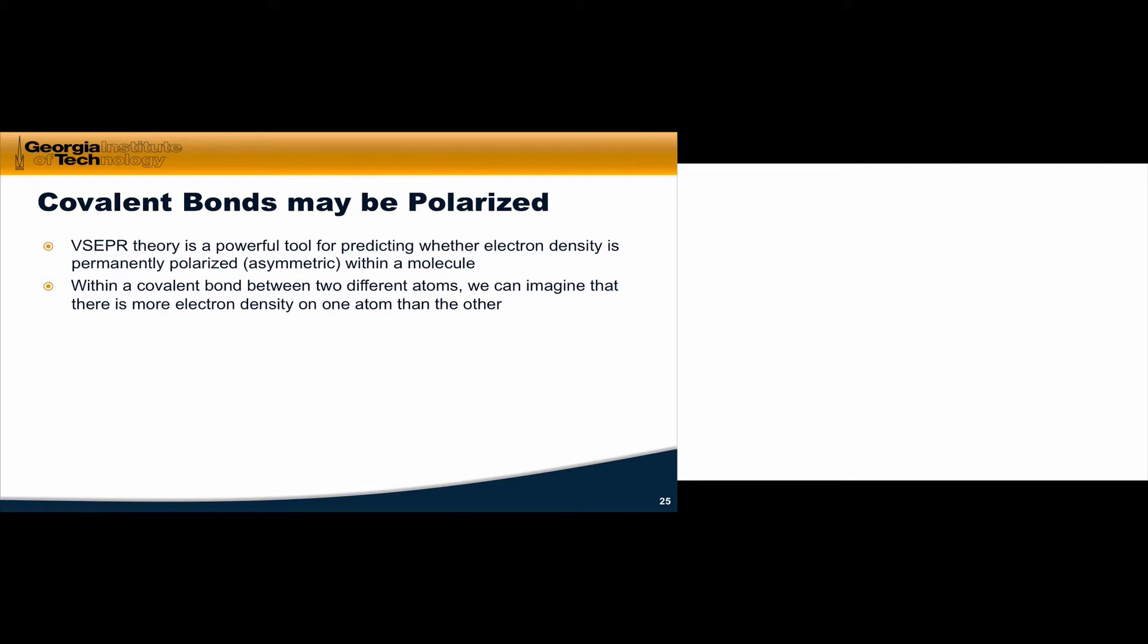So let's consider a generalized covalent bond between two different atoms, A and B. If the electronegativities of the two atoms are very different, then we should expect polarization of the bond. So for example, if the electronegativity of A is 1.0 and the electronegativity of B is 2.0, well then there's likely to be more electron density around the more electronegative B than there is around the less electronegative A atom.